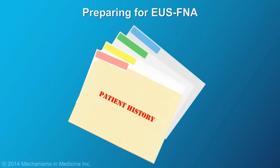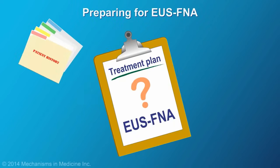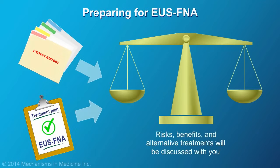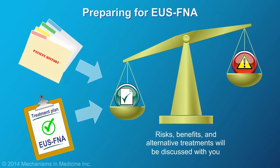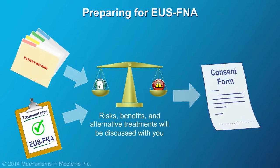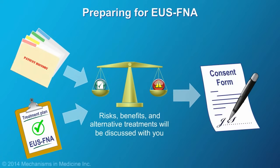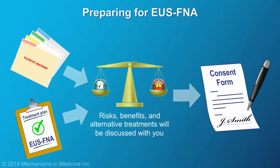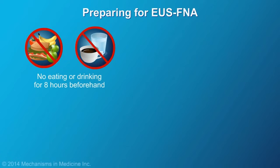Once your doctor has taken a full medical history, established a treatment plan, and has determined that there is a need for EUS-FNA, the risks, benefits, and alternative treatments will be discussed with you. You will be asked to sign an informed consent that acknowledges that you understand the risks and benefits of the procedure and authorizes your doctor to proceed. Preparing for EUS-FNA is very important. The upper GI tract must be empty — do not eat or drink for 8 hours before the procedure.